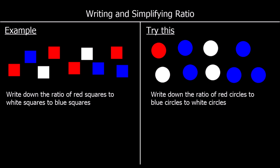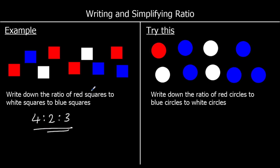Here's another example. This time we've got red squares, white squares, and blue squares. So we want to write down the ratio of red squares to white squares to blue squares. So red's going to be first. Red squares — how many have we got? We've got four. How many white squares have we got? Two. And how many blue squares? Three. So the ratio of red squares to white squares to blue squares is four to two to three. We can't simplify it, so this is our answer.